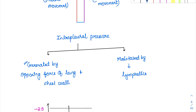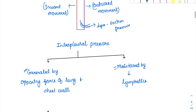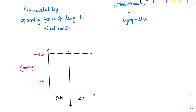This negative intrapleural pressure is maintained by the lymphatic system, which constantly drains the pleural space and creates a suction pressure. So the intrapleural pressure is always negative — it is always below atmospheric level.